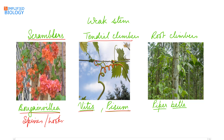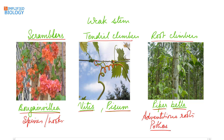Further examples of tendril climbers include Pisum. Last are root climbers — these are weak stems that climb with the help of adventitious roots. Examples include Piper betle, that is betel, and Pothos, that is the money plant.